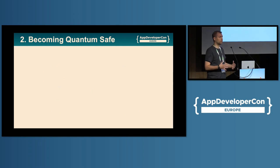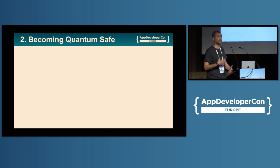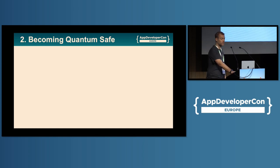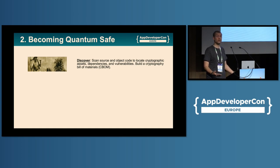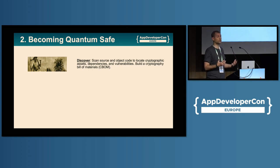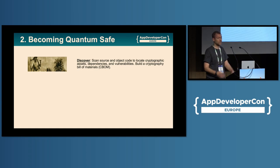So how do we become quantum-safe? There's really a three-step process. The first step is discover — we want to know where we are using cryptography. It's in a lot of places you might not expect. You want to build a C-BOM: a cryptography bill of materials. We've all heard of S-BOMs — these are C-BOMs. Step one: discover.